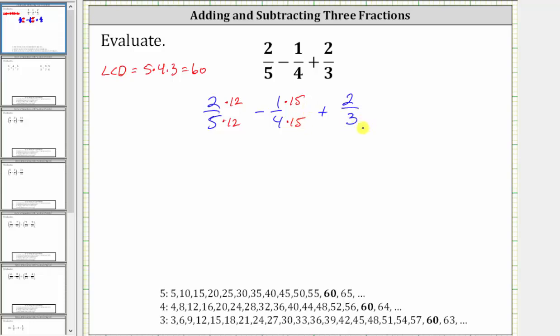And since three times 20 is equal to 60, we multiply the numerator and denominator of 2 thirds by 20.